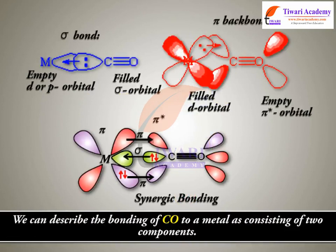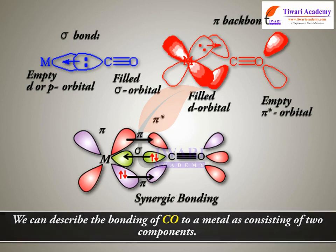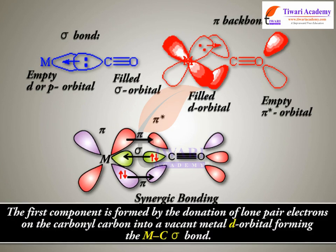We can describe the bonding of CO to a metal as consisting of two components. The first component is formed by the donation of lone pair electrons on the carbonyl carbon into a vacant metal d orbital, forming the M-C sigma bond.